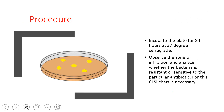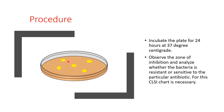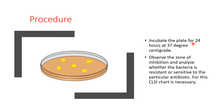After absorption, place the antibiotic disks onto the plate. Typically we use five antibiotic disks in a normal petri plate. Then incubate the plate for 24 hours at 37 degrees centigrade. After incubation, observe the zone of inhibition and analyze whether the bacteria is sensitive or resistant to each particular antibiotic.